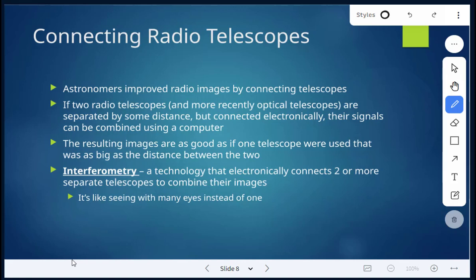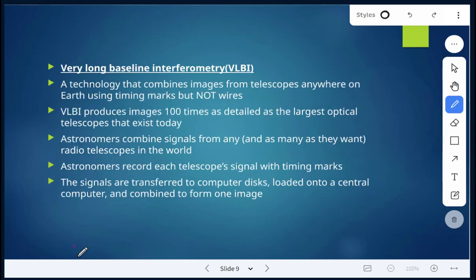And then their signals can be combined using a computer. And then that resulting image is as good as if one telescope was used that was as big as the distance between the two. And that's called interferometry. So it's a technology that will electronically connect two or more separate telescopes to combine their images. Okay. And it's like seeing with many eyes instead of one.